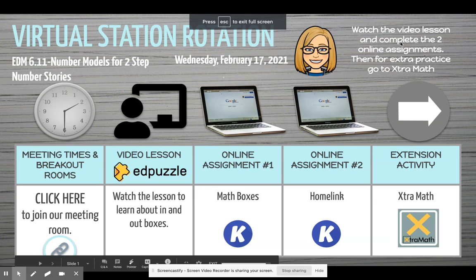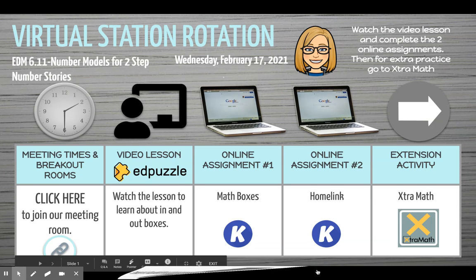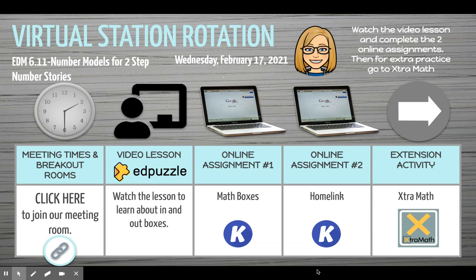Hey guys, so today we are going to be working on Everyday Math Lesson 6.11, and this is about number stories with two-step number models. These number stories are more difficult than the ones we have been doing because we have to stop and think about what the story is saying, what the two steps are, how to write the number models or number sentences, and we might be using parentheses and the order of operations to help us solve these problems. We are going to go through them step by step, use our CUBE strategy, and use the order of operations to get us through it.